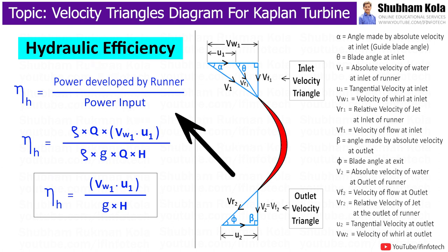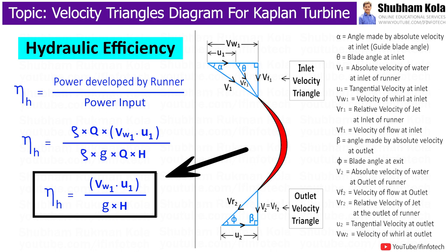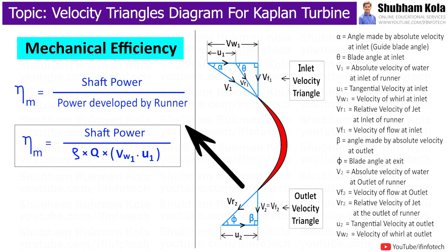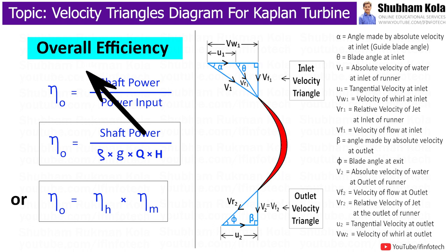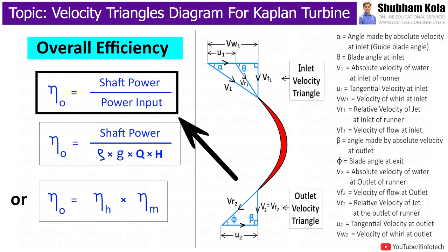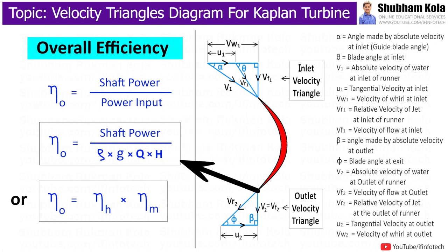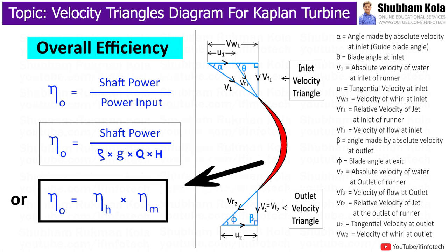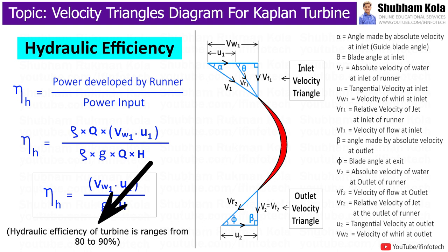Hydraulic efficiency of the turbine is given by the power developed by the runner P divided by the input water power, where H is the net head on the turbine. After simplification, ρQ cancels and we get the formula for hydraulic efficiency. Mechanical efficiency is shaft power divided by power developed by the runner. Overall efficiency is shaft power divided by input power ρgQH, and it also equals hydraulic efficiency multiplied by mechanical efficiency. The hydraulic efficiency of the turbine ranges from 80 to 90 percent.